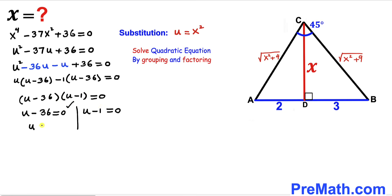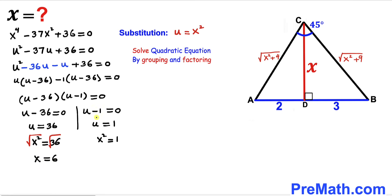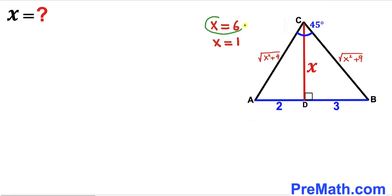Separating the two factors: u = 36 or u = 1. Recalling our substitution u = x², we replace u with x²: x² = 36 gives x = 6, and x² = 1 gives x = 1. So we have two candidate values: x = 6 and x = 1.